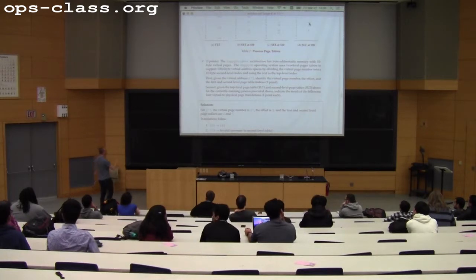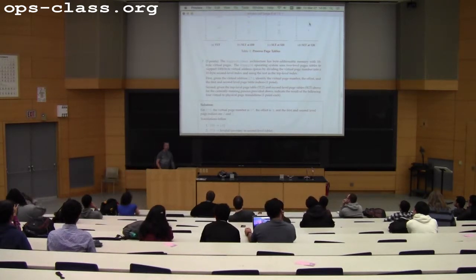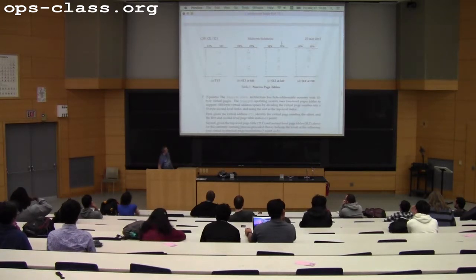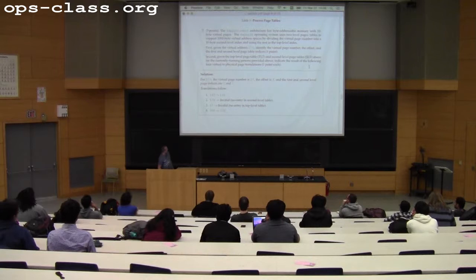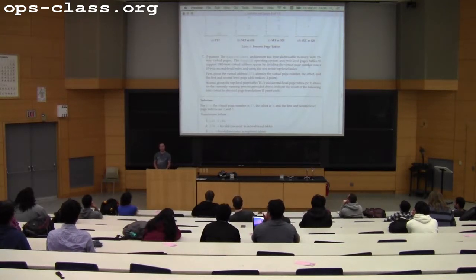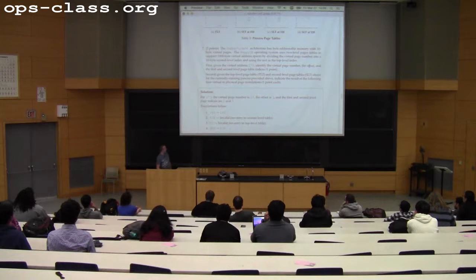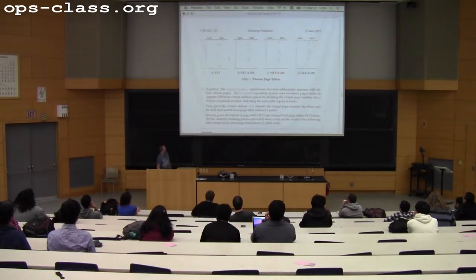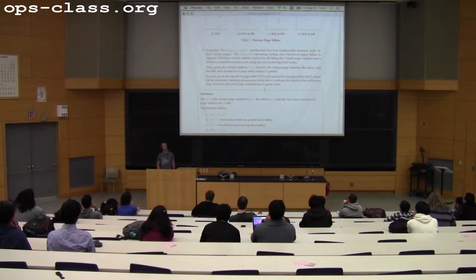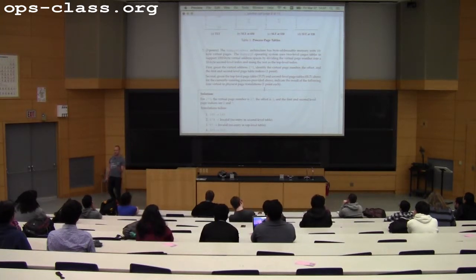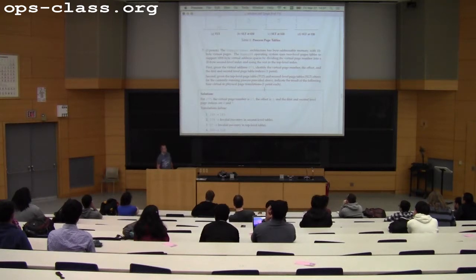The remaining translations: the second one had no entry in the second-level table—there is an entry for 5 in the first-level table, but the second-level table has no entry for 7. The third one used index zero in the first-level page table, which doesn't map anywhere, so it's also an invalid address. The final virtual address was 900—that one worked, taking you to the second-level table at 320, which mapped zero to 31, giving physical address 310 with offset zero from the original virtual address.